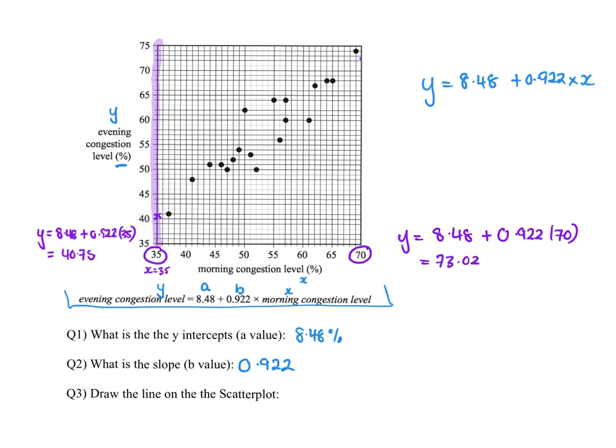So I might write those points down. So I had 35, 41 or something, and then I had 70, 73. There you go. And then you get your ruler and you join your two crosses, and there you've drawn that equation on the scatterplot.